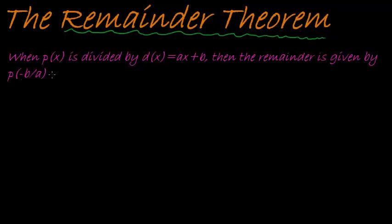So, let me unpack this theorem for you. First, let me read it. When a polynomial p(x) is divided with another polynomial, d(x), but d(x) is a first degree polynomial, ax plus b, then the remainder is given by this.